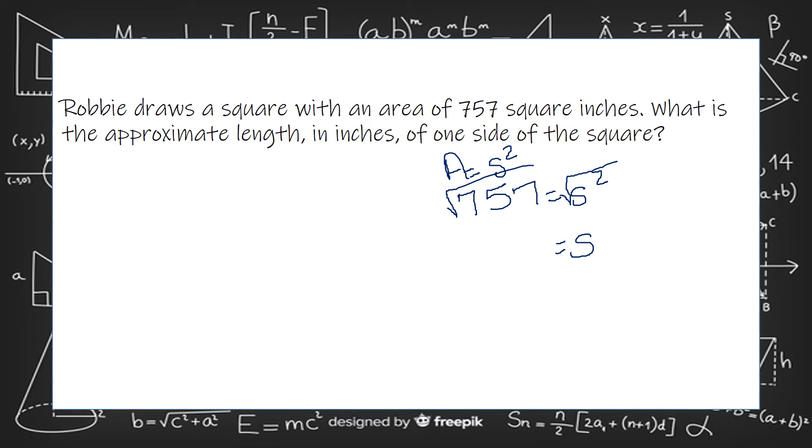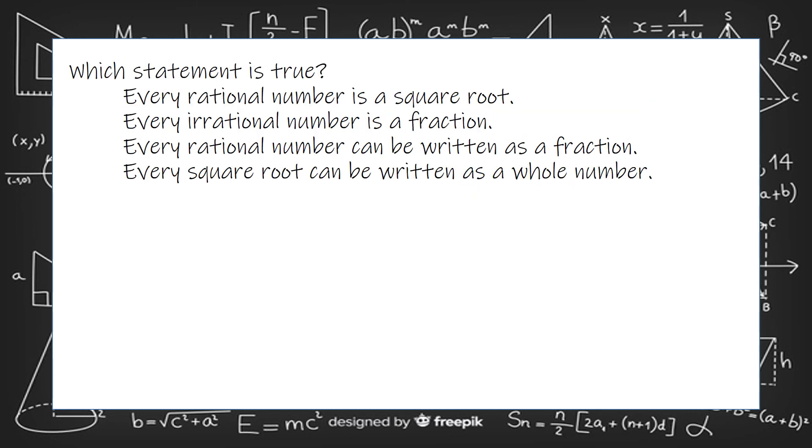So to get rid of the square on the side, we have to take the square root of both sides. Now you could estimate this, but you can also type it in your handy dandy calculator to get the best estimate, and that is what statement is true.